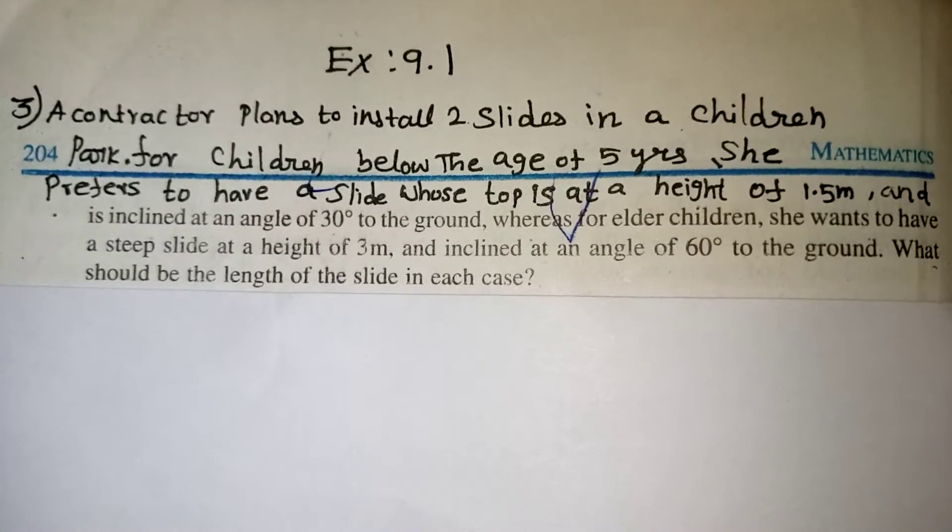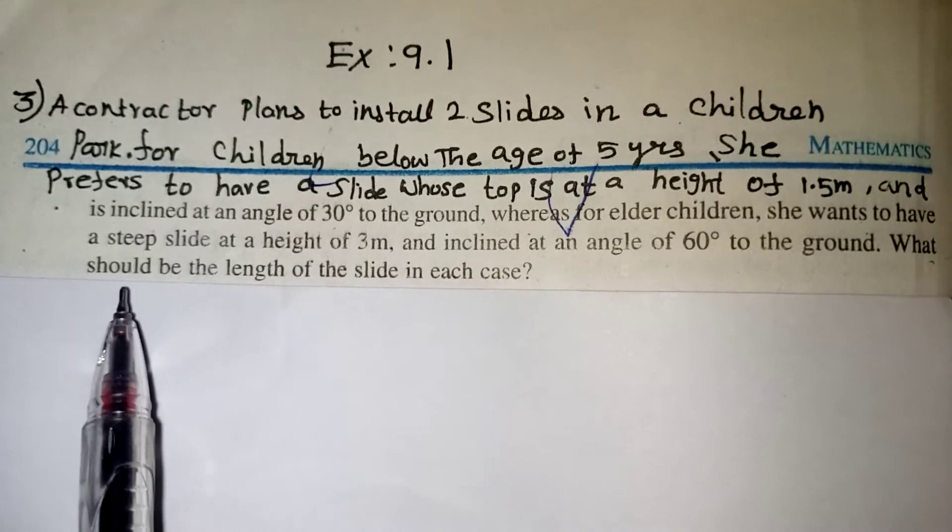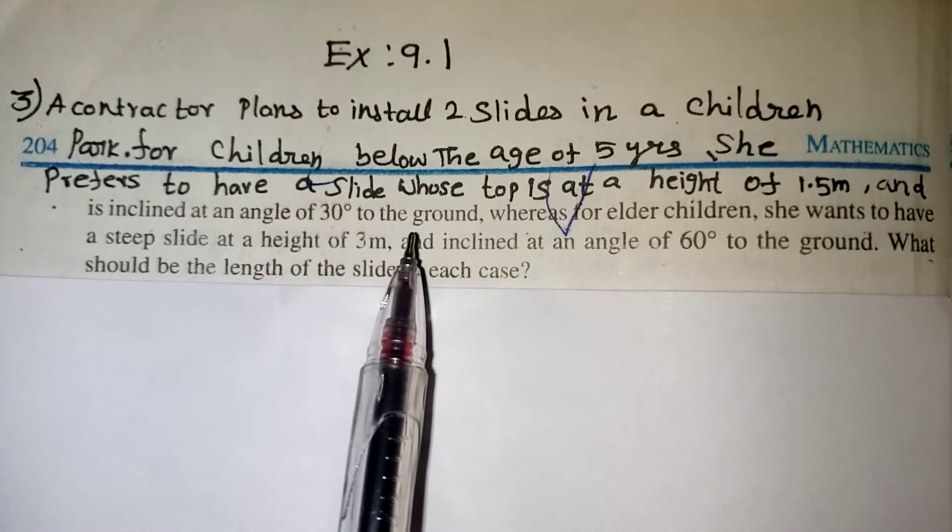Hi students, in this video we are going to learn exercise number 9.1 question number 3. A contractor plans to install two slides in a children's park.